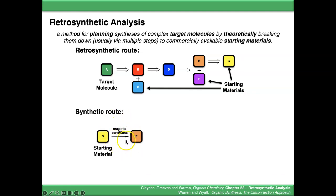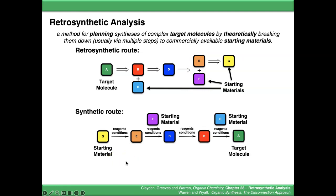Notice this is now a reaction arrow, it's not a retrosynthetic arrow. We think that by treating E with F and some reagents and conditions, we can make D, and so on and so forth, until we end up with our target molecule.